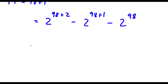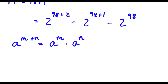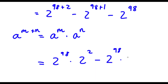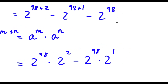Now if I have something in the form a to the power of m plus n, this is equal to a to the power of m times a to the power of n. So in this case, 2 to the power of 98 plus 2 equals 2 to the power of 98 times 2 to the power of 2. And 2 to the power of 98 plus 1 equals 2 to the power of 98 times 2 to the power of 1. And 2 to the power of 98 we simply leave by itself.